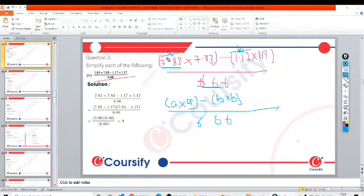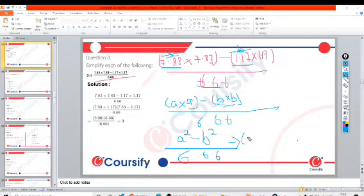Let's say I will call 7.83 as a and 1.17 I will call as b. Okay, so a into a and b into b is the term as it is. So this term is a square minus b square upon 6.66. Now you will know that a square minus b square is a plus b and a minus b.